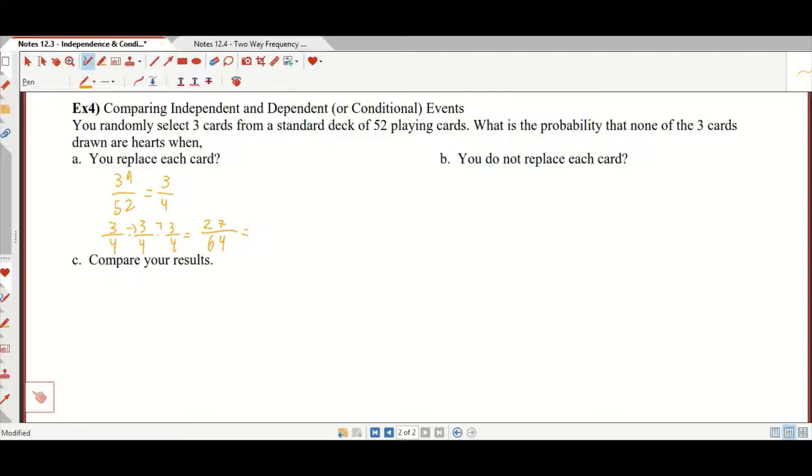Which is 0.421875, which is 42.1875%. You have about a 42% chance of drawing 3 cards and not getting a particular suit. In this case, a heart. What if you don't replace each card?